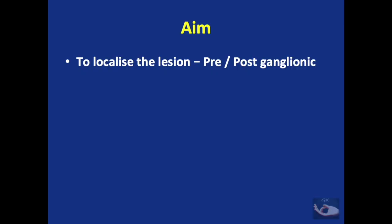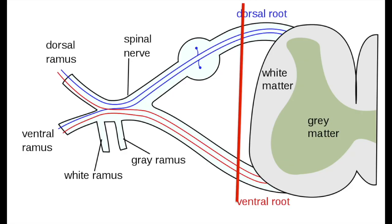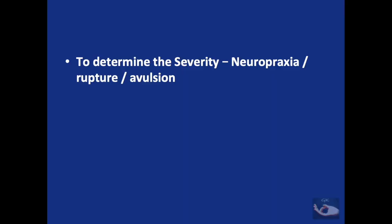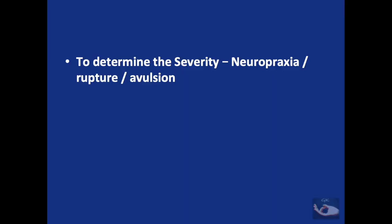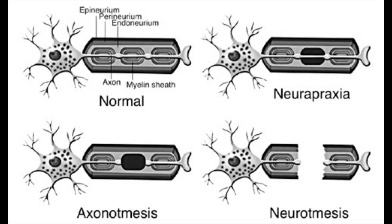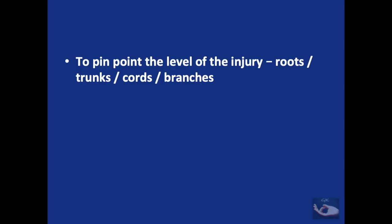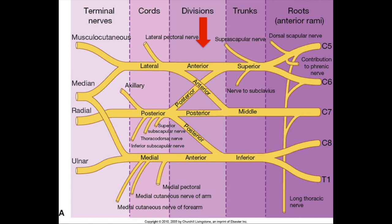When a patient presents with a brachial plexus injury, it may be obvious that the injury exists, but what may not be obvious is the severity and extent of the lesion. The aim of evaluation is to localize the lesion — whether it is pre-ganglionic or post-ganglionic — and to determine the severity, that is whether it is a neuropraxia or a neurotmesis. We also need to evaluate the level of injury: the roots, trunks, divisions, cords or the terminal nerves.